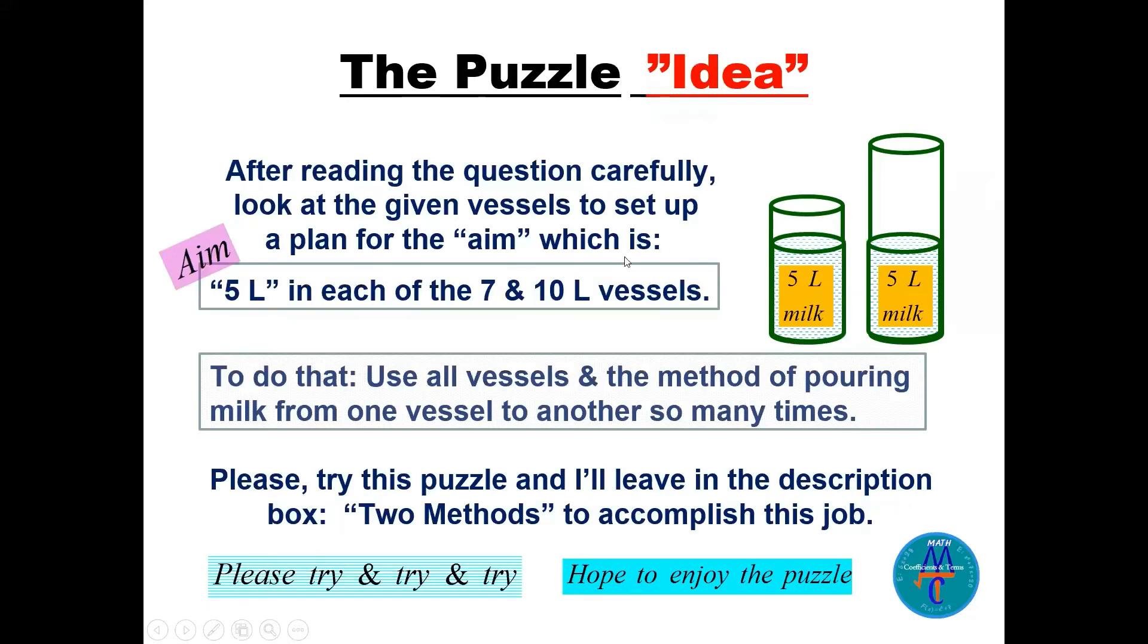It's not difficult but you have to be patient. So I'll give you here the idea. Please read the question carefully and look at the aim. The aim is to have five liters in each of the seven and the ten, because three is smaller than five but we have to use that three. To do that, use all vessels and the method of pouring milk from one vessel to another so many times. You have to try and try and try. Hope you enjoy the puzzle.